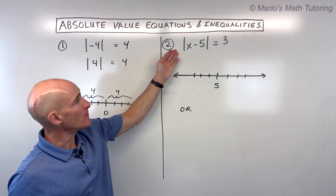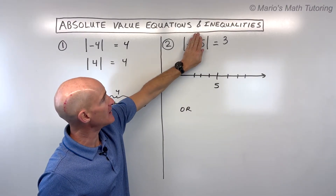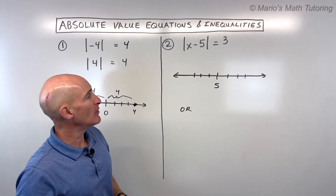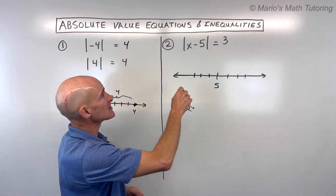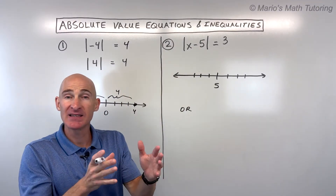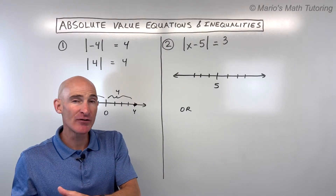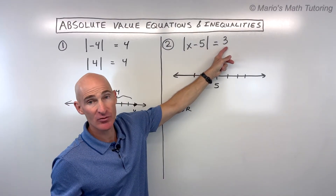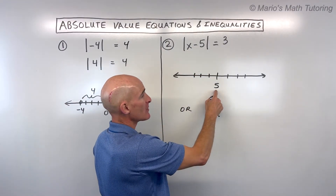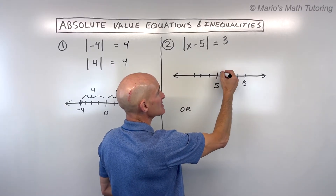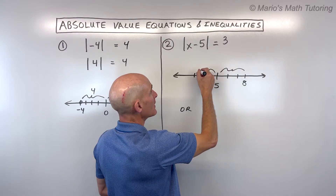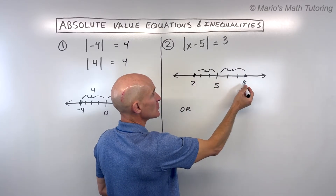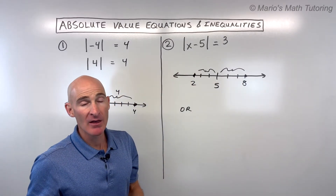For number two, we have this quantity inside the absolute value equal to three. One way to look at this is to think of the minus sign as the difference, and in geometry the difference is like the distance. So we're saying the distance between some number and five is three units. That could be here at eight — three units to the right of five — or three units to the left of five, which would be two. So our solutions are x equals two or x equals eight.